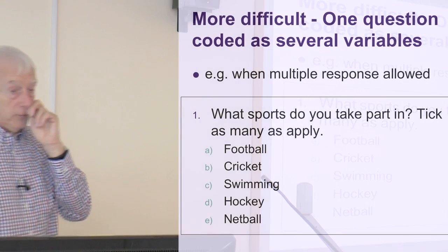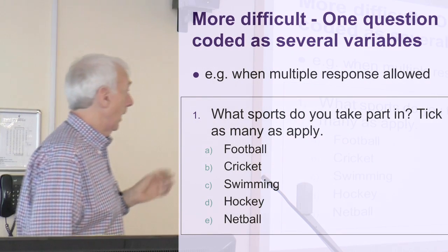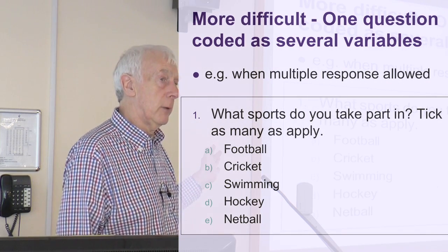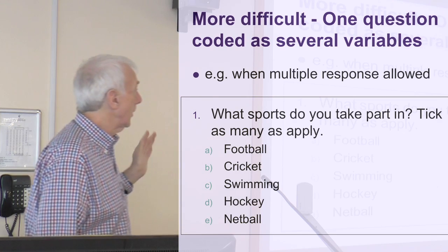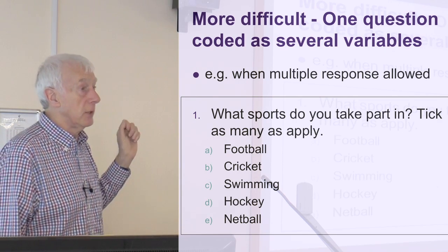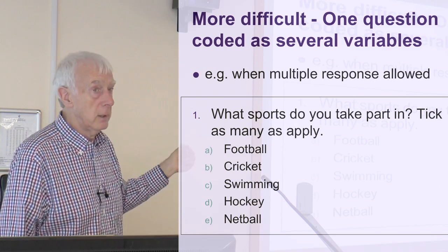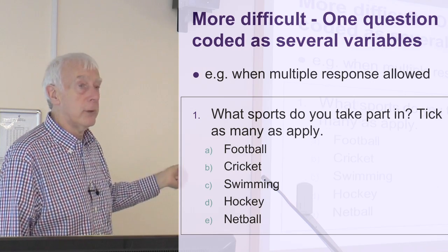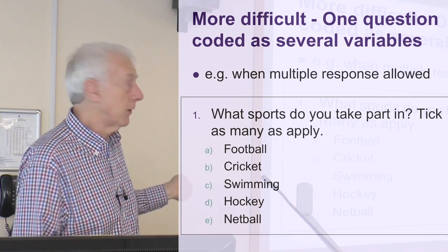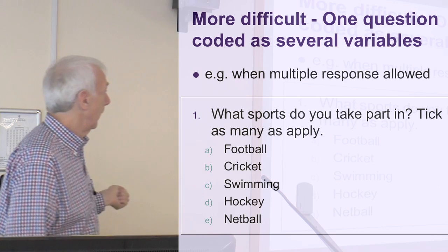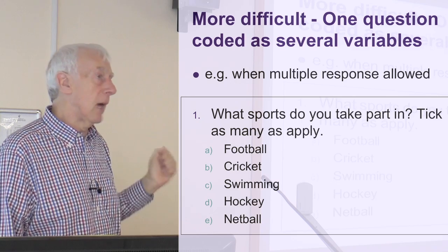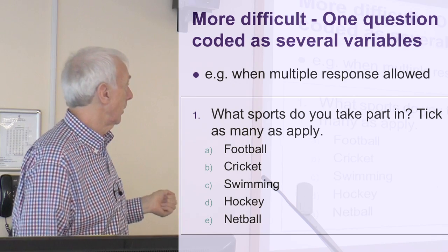What happens though if you get a more difficult situation like this one? Apparently it looks like a categorisation question I've dealt with already, but actually we're asking the people to tick as many as apply. So people might tick just one, they might tick two, or three, or four, or even all five, depending on how many sports they do. So it's quite possible you might get five answers, but very likely you'll get more than one answer to this question.